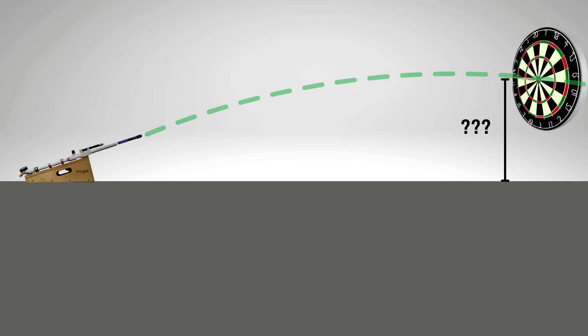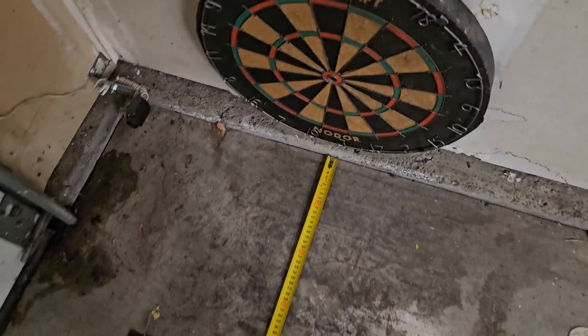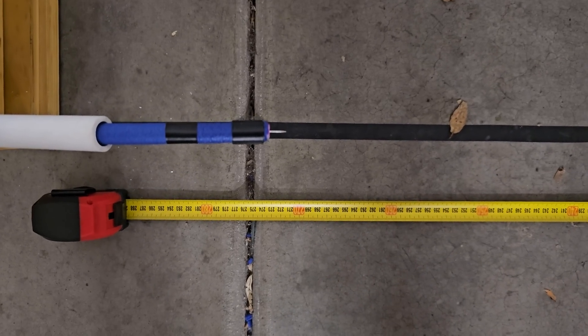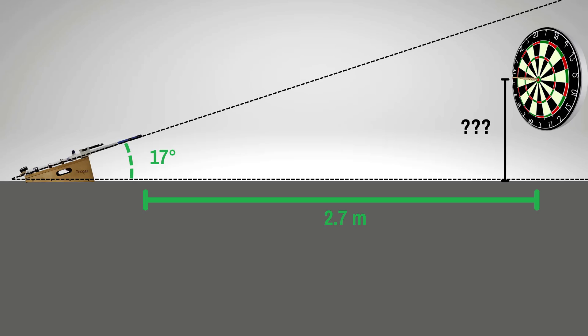Next, I had to decide what height I should put the dartboard if I want the dart to get a bullseye when launched from about 2.7 meters away from the tip of the dart as it exits and at an angle of roughly 17 degrees.